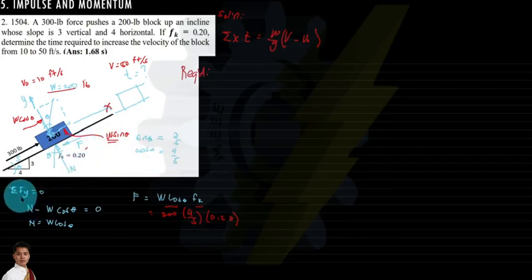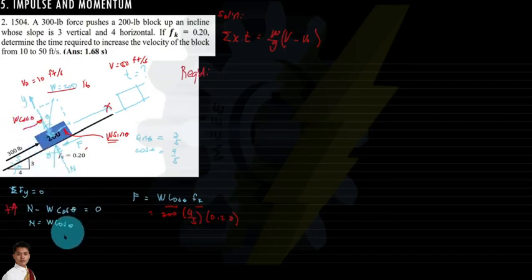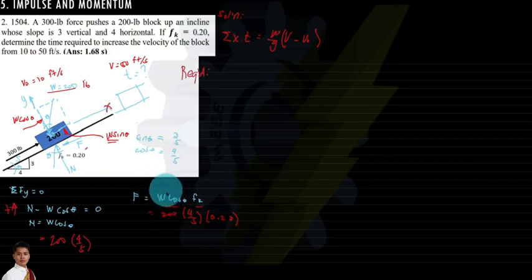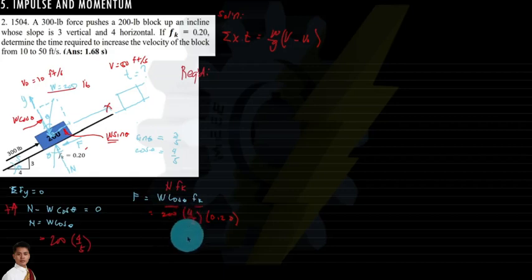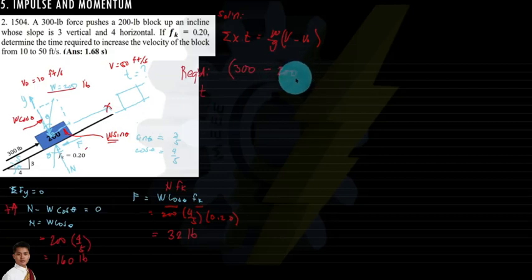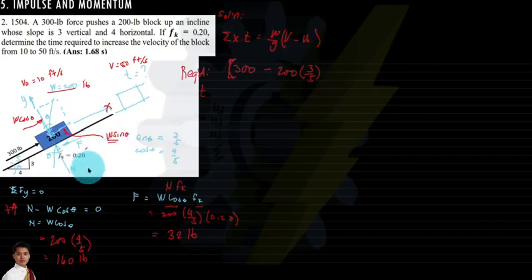Solving for the normal force by taking summation of forces along y equal to zero: N minus W cosine theta equals zero, so N equals 200 times (4/5). The friction force is then N times f-sub-k equals 200 times (4/5) times 0.2. Applying summation along x: 300 minus 200 times (3/5) minus 200 times (4/5) times 0.2 times t equals (200/32.2) times (50 minus 10).